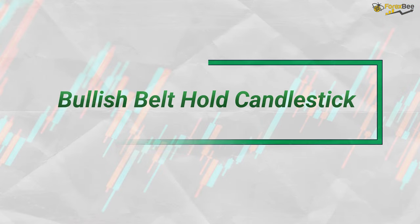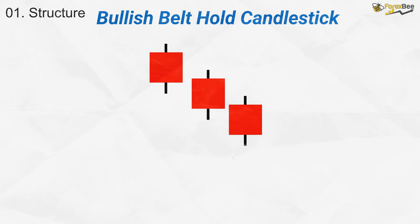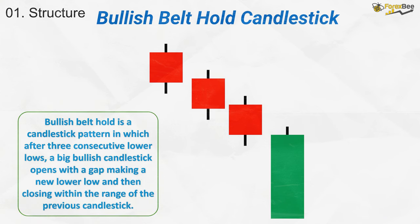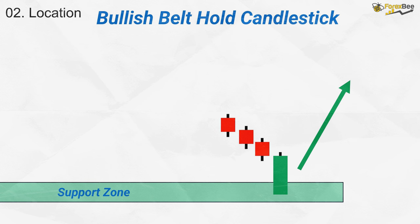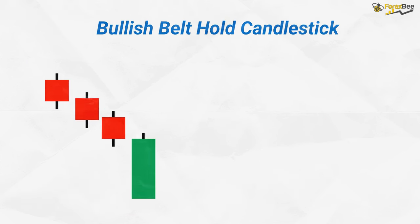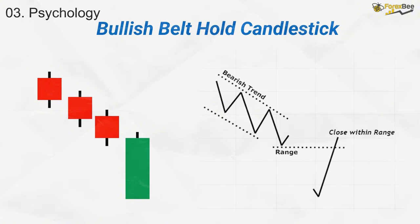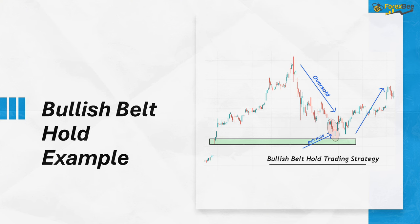Next, let's discuss the bullish belt-hold candlestick pattern. This pattern is made up of four candles. The first three candles demonstrate a clear downtrend, forming consecutive lower highs and lower lows, indicating a sustained bearish movement. However, the fourth candle is crucial — it's a large-bodied bullish candle that opens with a gap down, making a new lower low, but quickly reverses and closes within the range of the previous candle. This pattern typically forms near a support zone, signaling the potential end of the downtrend. Psychologically, it reflects a decisive shift in sentiment, as strong buying interest suddenly meets steady selling pressure. In the example, the bullish belt-hold forms at a support zone where the trend shifts from bearish to bullish.